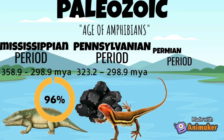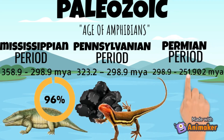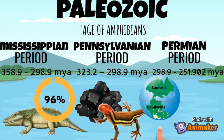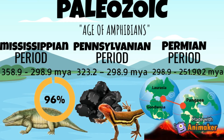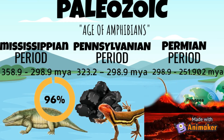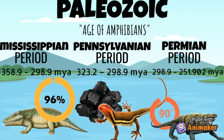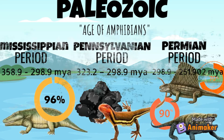The last is the Permian period, which was 298.9 to 251.902 million years ago. The Kandwana, La Russia, and Siberia fused with smaller continents to form the supercontinent Tangia. The Permian extinction is estimated to have wiped out more than 90% of all marine species and 70% of land animals.